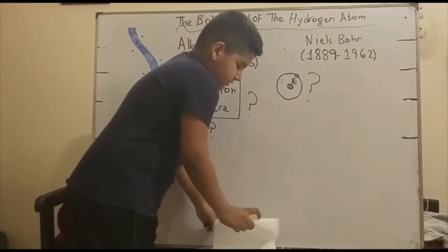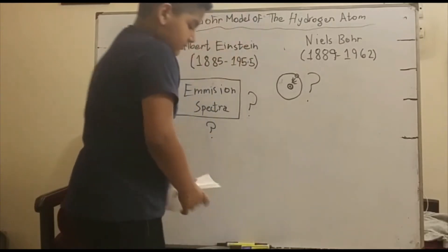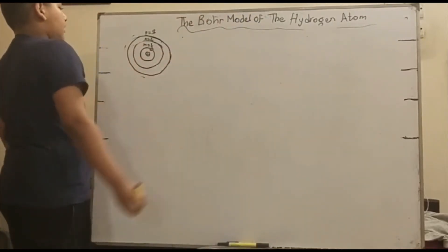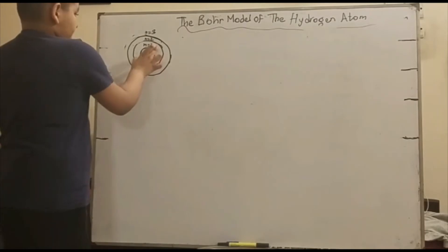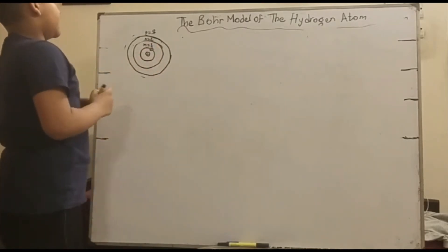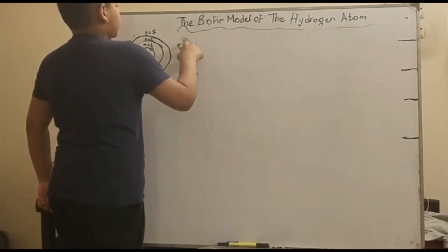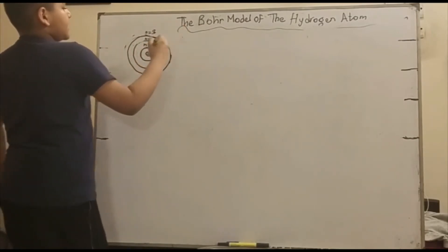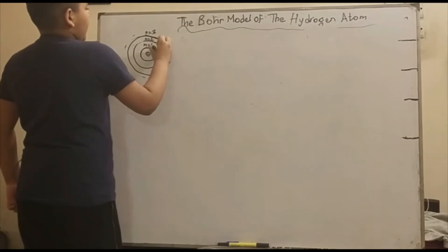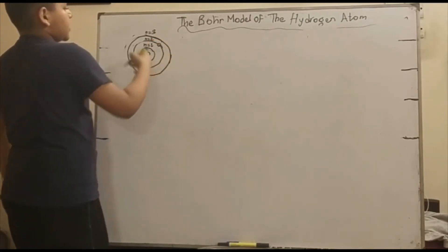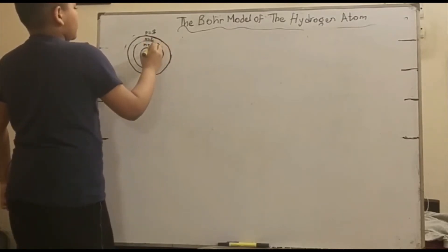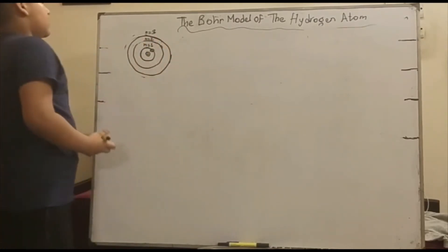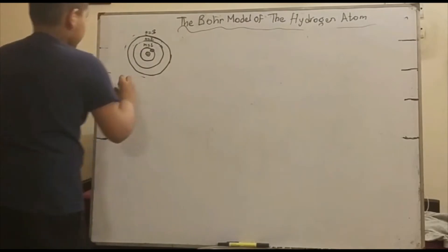Bohr had ideas about these, and he got a model. The Bohr model of the hydrogen atom states that atoms have energy levels at particular distances to the nucleus. If a photon is absorbed by the atom, then the energy increases, making the electron go further because it's in a higher energy state. If it emits a photon, then it goes back, and the distance it goes depends on the energy of the photon.